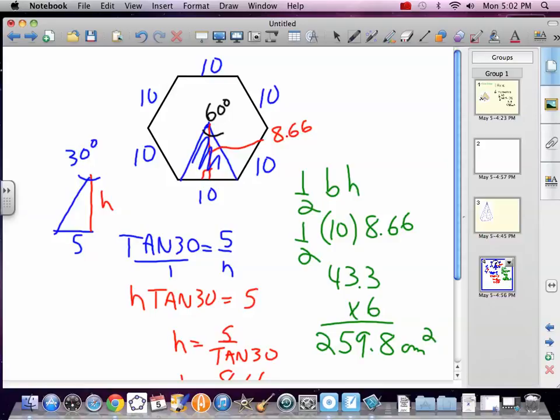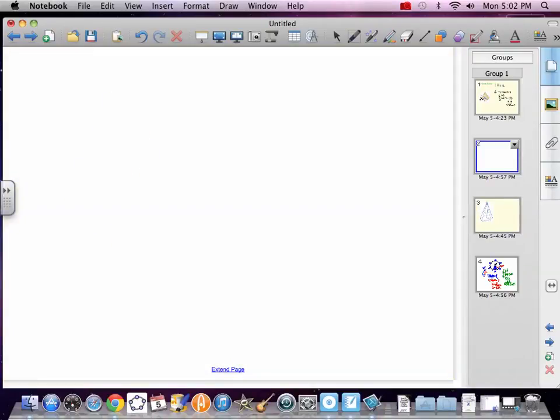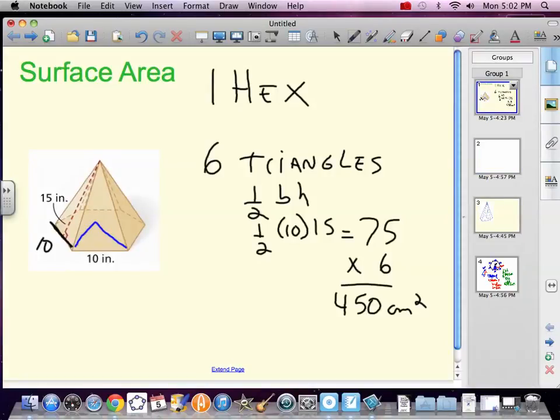So our hex is 259.8. We need to take that back to the other side. Hex 259.8 centimeters squared. So area of the hex 259, area of the sides which is another kind of six triangles, 450.